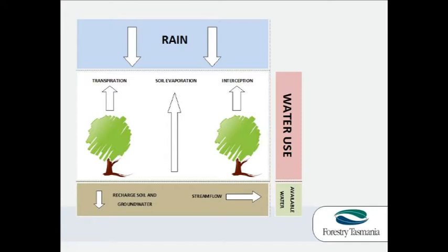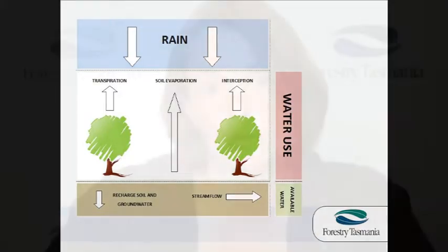The other thing that happens to rain that falls on the forest is that it infiltrates the soil or runs over the soil surface and either becomes stream flow or recharges soil moisture stores or groundwater storage. When I talk about available water, this is the water I'm talking about — the water that remains in the catchment and is available for other uses such as ecosystem processes, drinking water or irrigation.